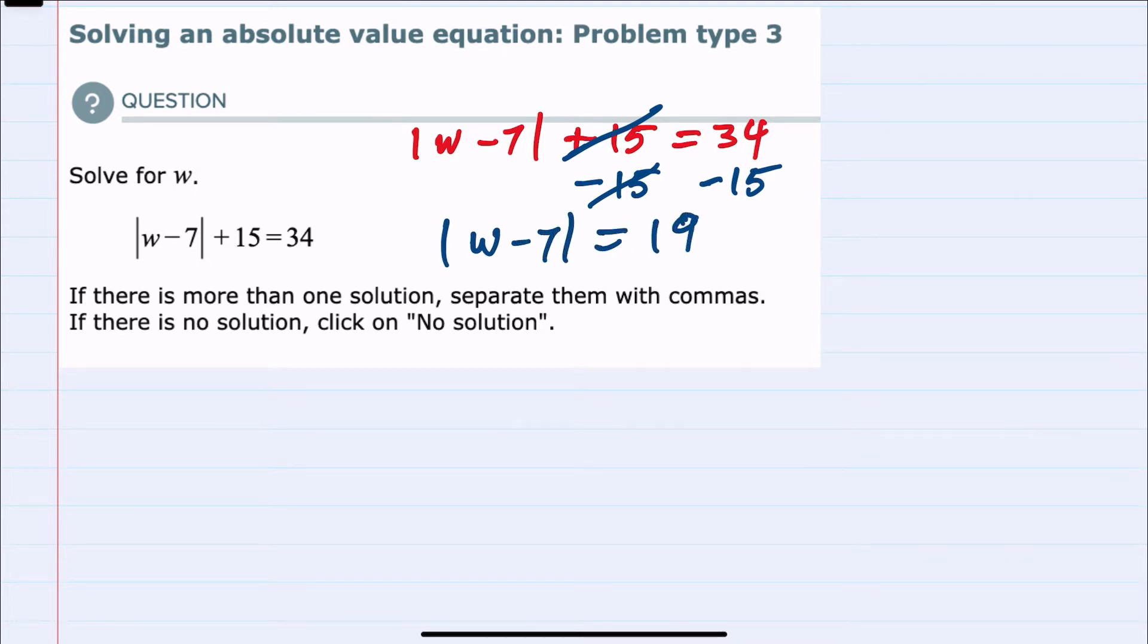And once we have the absolute value by itself, we want to check to see if there's a situation where we could have no solution. That would happen if the absolute value equals a negative.